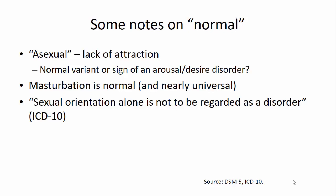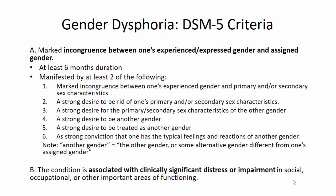So let's talk about gender dysphoria. Here are the DSM-5 criteria. The highlights are that there's an experienced or expressed gender that is different from one's assigned gender, occurring over six months duration and including two of these other criteria: a strong desire to be rid of one's primary or secondary sex characteristics, a desire to be the other gender, to be treated as the other gender, and a strong conviction that one has feelings typical of another gender. This comes with associated clinically significant distress or impairment in social, occupational, or other important areas of functioning.